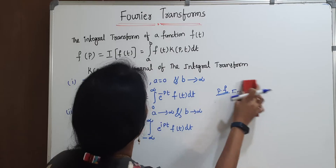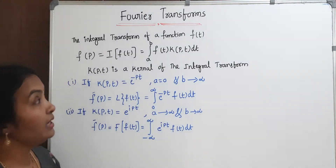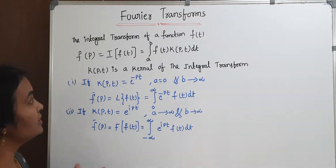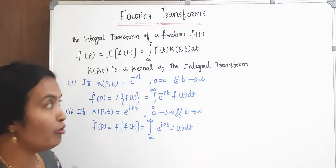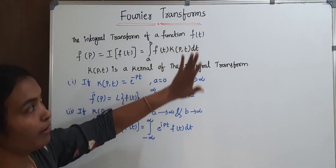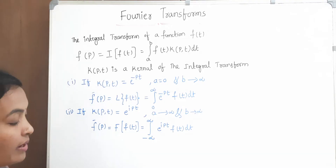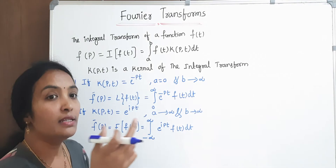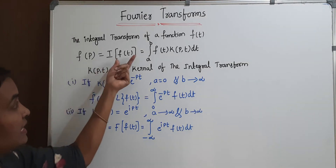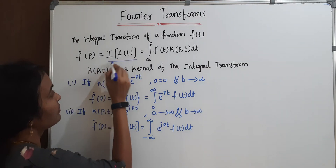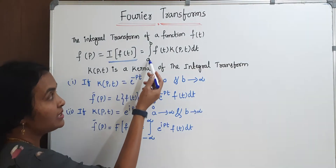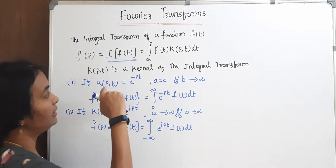Before going to discuss the Fourier transforms, you must know one term: the integral transform of a function. Suppose the function is f(x) or f(t). I will consider a function in terms of f(t), because it is a time domain — it is mapped with the time domain and the frequency domain. The integral transform is defined as: integral from a to b of f(t) times k(p,t) dt.